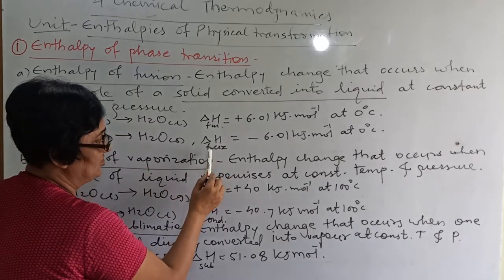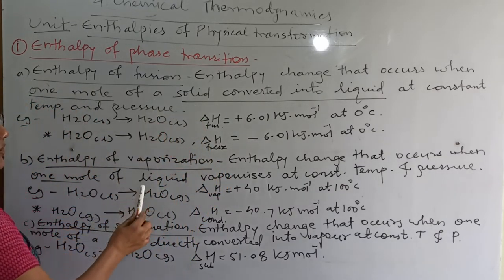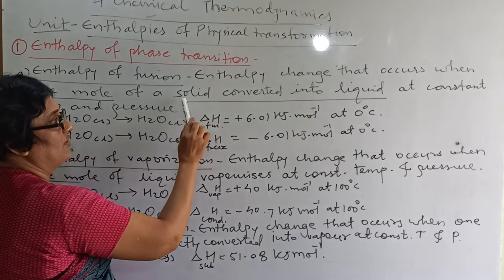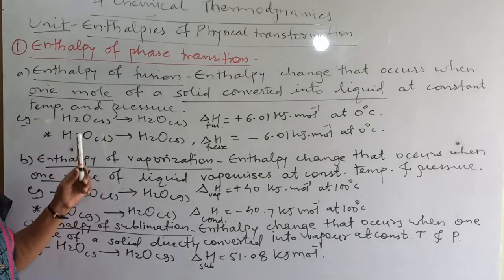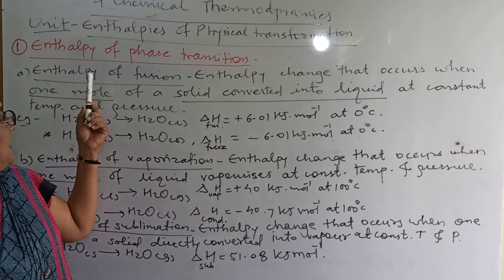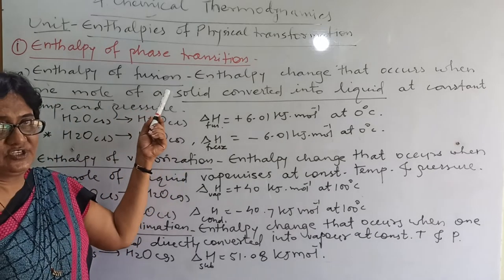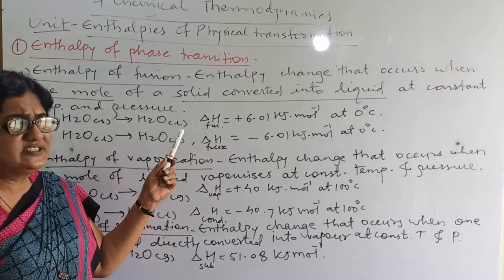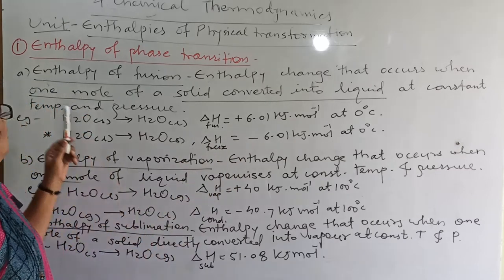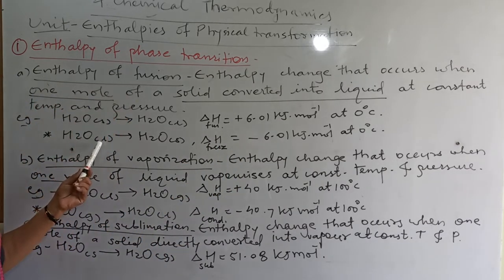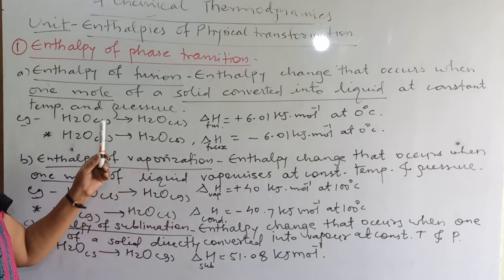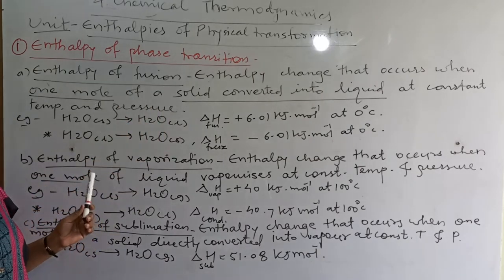The definition for enthalpy of freezing is the same — you only change 'conversion of solid into liquid' to 'liquid to solid.' In an examination, the definition can be asked for delta H freezing. The definition is exactly the inverse of the enthalpy of fusion; only the words are exchanged. The value is also identical — only the sign is different. You can write the enthalpy of freezing at home, which is the inverse of fusion.